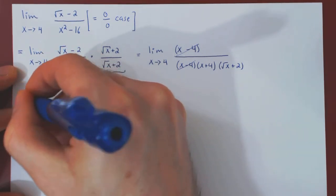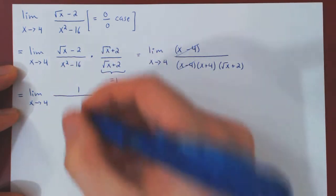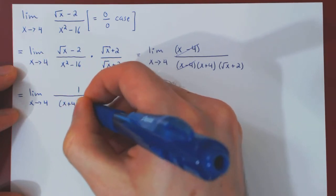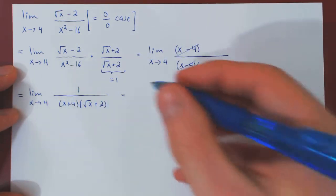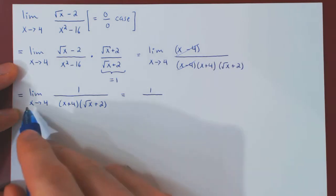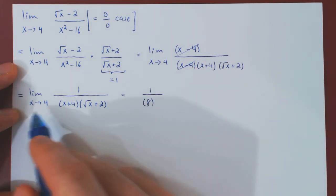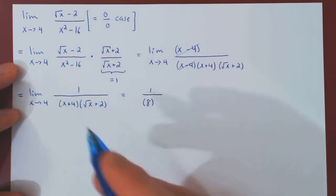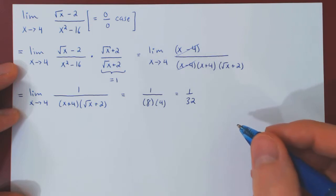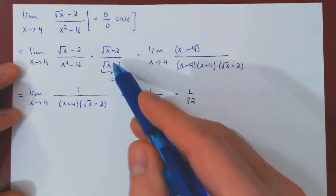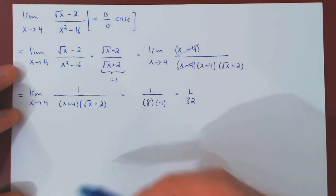The limit now becomes trivial. As x approaches 4: 1 stays 1; x plus 4 approaches 4 plus 4, which is 8; root of x approaches root of 4, which is 2, so 2 plus 2 is 4. The limit ends up being 1 over 32. That's one solution using the method of conjugation, but again, as the case is 0 over 0, L'Hôpital's rule also applies.